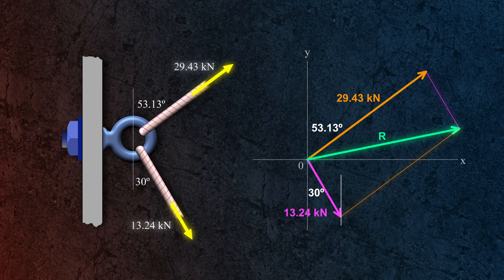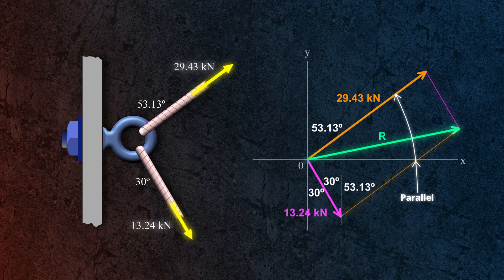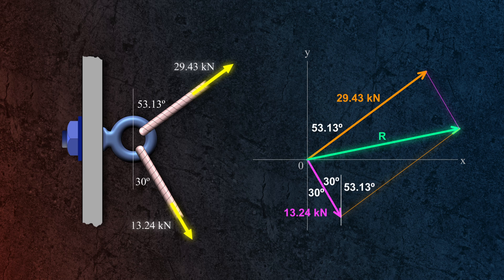This angle is also 30 degrees from the vertical since they are alternate interior angles. And since these vectors are parallel, therefore this corresponding angle remains 53.13 degrees. So the included angle opposite to the resultant is equal to 30 plus 53.13 degrees, which gives us 83.13 degrees.